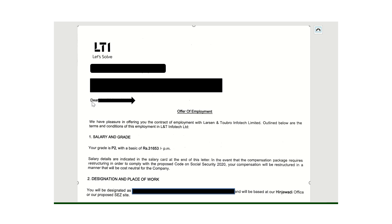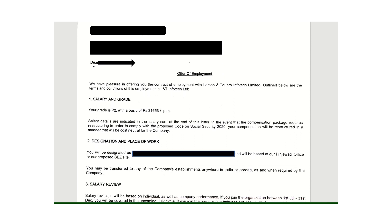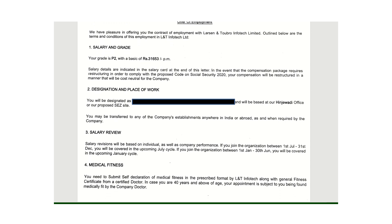In the LTI offer letter, you will get the candidate name, address, and the document number. The important part is they mention the first point where your grade is mentioned — which grade you are getting — and the basic salary they are providing. The structure of the compensation is as per the standard 2020 year. After that, they mention the designation and the location of your work, including your exact designation and location.